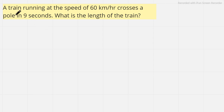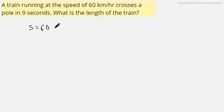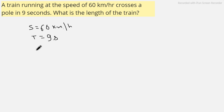In the first question, we see that a train running at a speed of 60 kilometers per hour crosses a pole in nine seconds. What will be the length of the train? This is a pretty simple example. We are given the speed — that is 60 kilometers per hour — and the time, which is nine seconds.